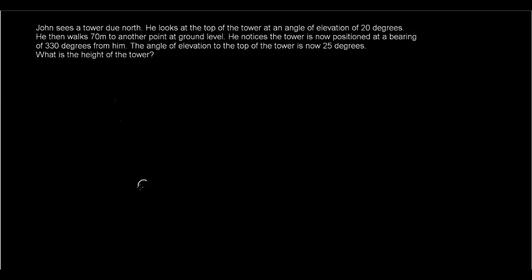So let's draw a picture of this question. We have John. He sees a tower due north, so straight up from where John is north. This is the north. We see a tower. And he looks at the top of the tower at an angle of elevation of 20 degrees. Rather than drawing it here, I'm going to draw a separate triangle that is the side view. This is the top. This is the bird's eye view.